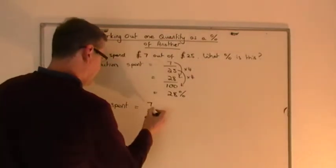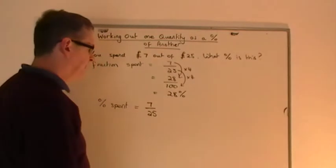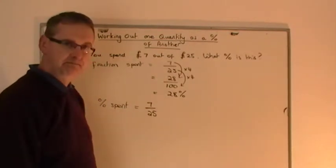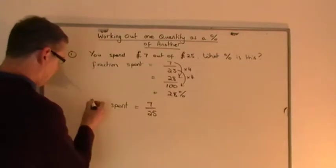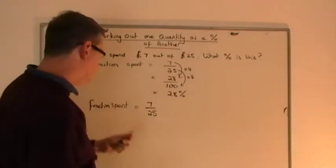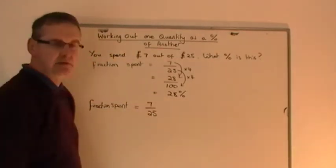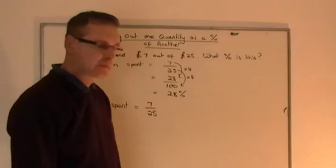The fraction that is spent is £7 out of £25. That's the first step. In fact, I think just to show that the basic technique is the same as this to begin with, I'll write fraction spent equals 7 25ths.